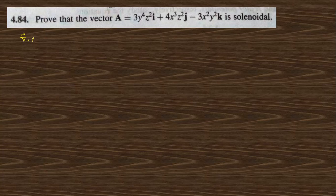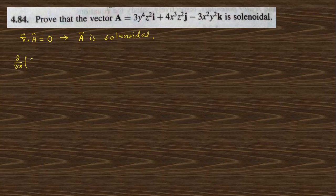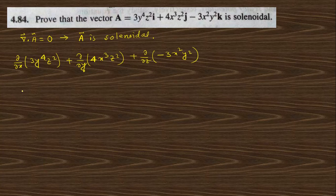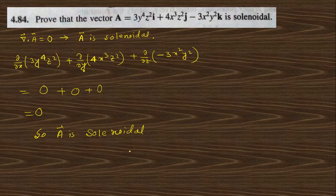Go to the next question, 4.84: prove that this vector is solenoidal. A vector is solenoidal if its divergence is 0. So we need to find divergence of A. Divergence of A is del/del x of the x-coefficient, which is 3y⁴z², plus del/del y of the y-coefficient, which is 4x³z², plus del/del z of the z-coefficient, which is minus 3x²y². There is no x in the first term — it's 0. There is no y in the second term — it's 0. There is no z in the third term — it's also 0. Since divergence is 0, A is solenoidal. This is very simple.